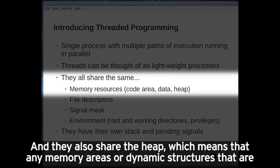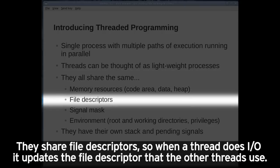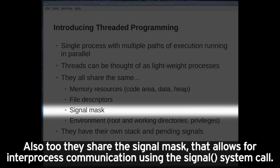Threads also share the heap, which means that any memory areas or dynamic structures that are allocated can be shared among all the different threads. They share file descriptors, so when a thread does I/O, it updates the file descriptor that the other threads use. They also share the signal mask that allows for inter-process communication using the signal system call.